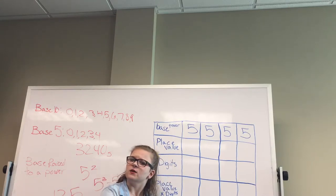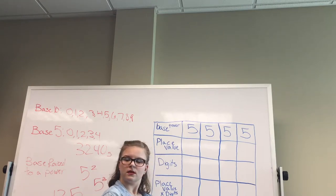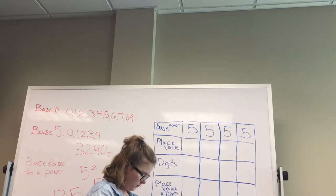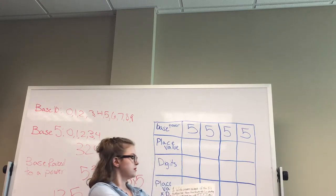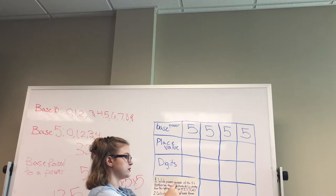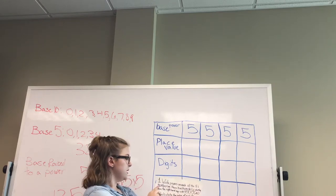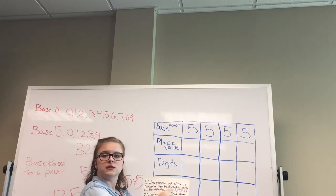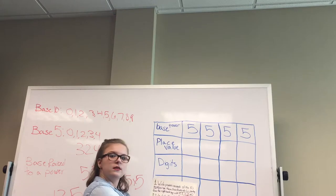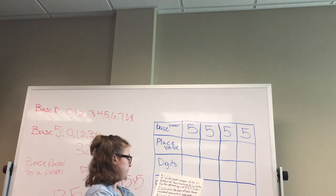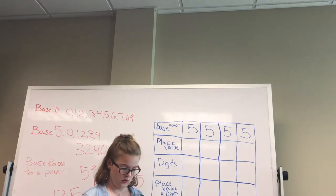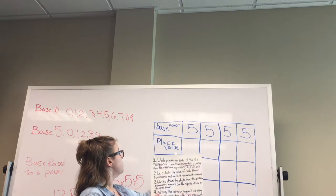Raise your hand if you have any questions along the way. I have a poster here with the rules. Rule one: write powers on each of the fives, numbering them backwards starting from the right-hand side with zero, then one, then two, then three, and so on. Rule two: calculate the value of each power or exponent as we learned, and write it underneath in row two.